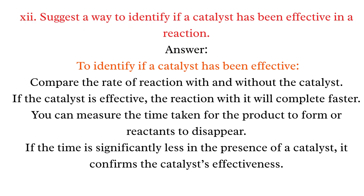Q12: Suggest a way to identify if a catalyst has been effective in a reaction. Answer: Compare the rate of reaction with and without the catalyst. If effective, the reaction with the catalyst will complete faster. Measure the time taken for the product to form or reactants to disappear. If time is significantly less in the presence of the catalyst, it confirms the catalyst's effectiveness.